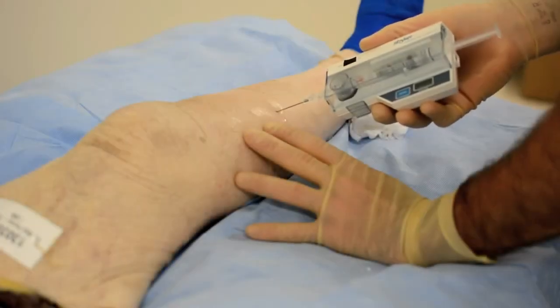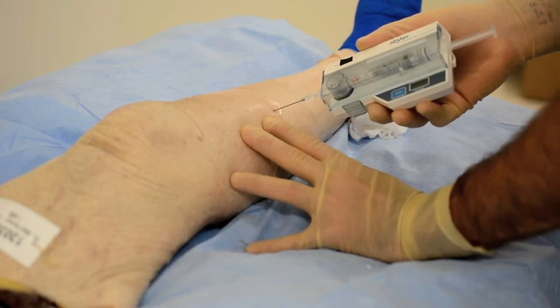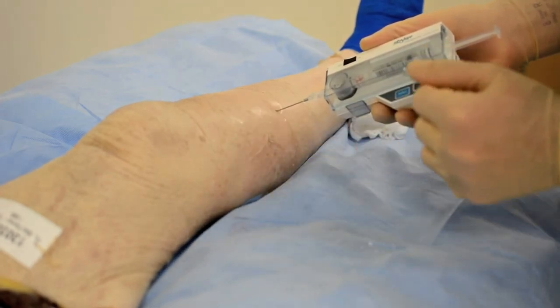It's important to allow stabilization of the fluid column to get an appropriate reading. You then can verify you are transducing from the compartment by gently palpating on the compartment and seeing the appropriate pressure bump.